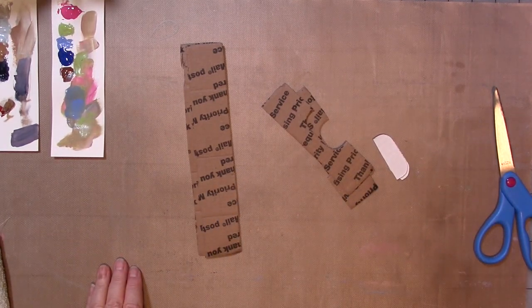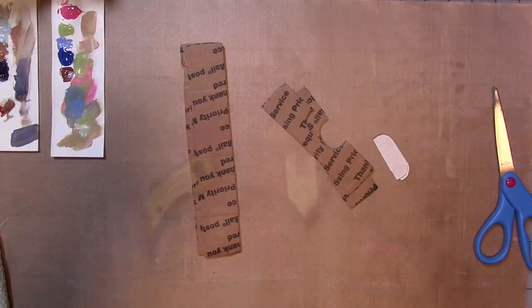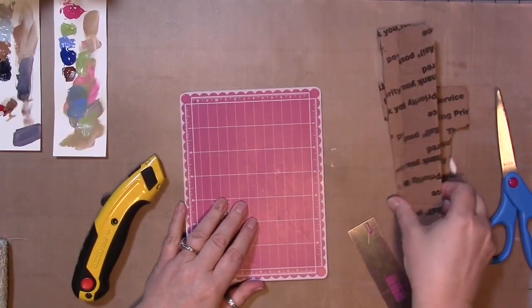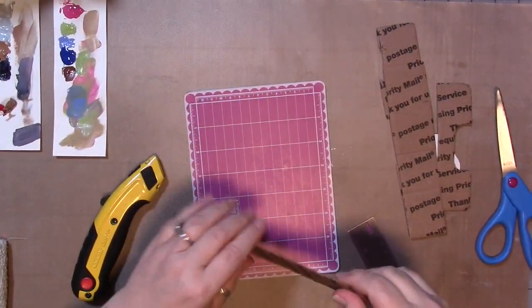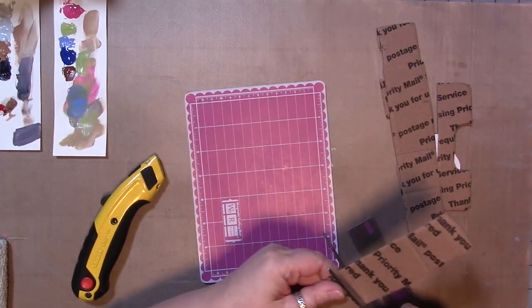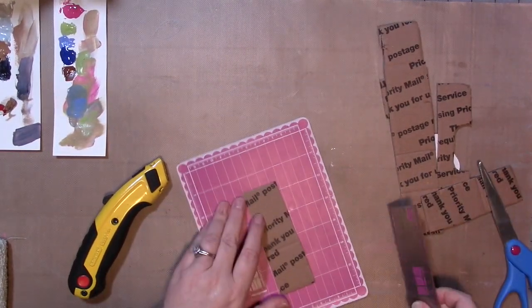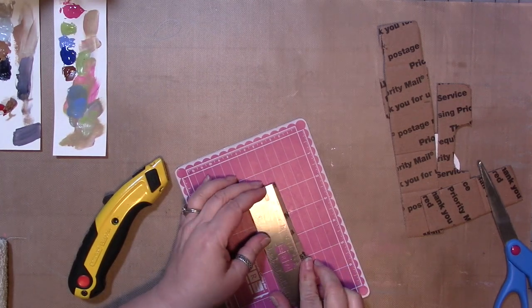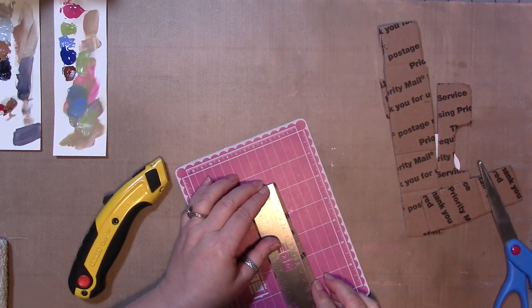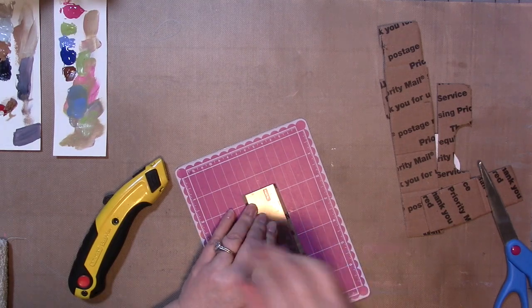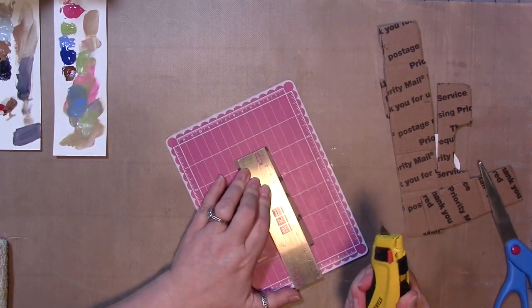So we just have ordinary packaging cardboard. This is from a Priority Mail box that I had. The first thing I want to do is I want one edge of this to be as straight as possible.